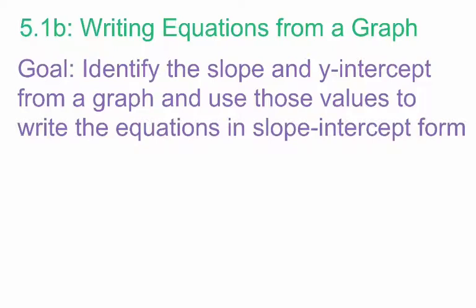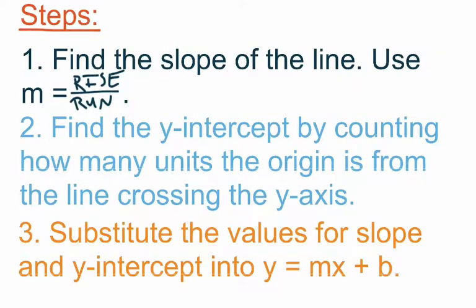Here are the steps. Our first step is to find the slope of the line. When we're dealing with the graph of a line, in order to find the slope, we want to use m equals rise over run. Now if you wanted, you could identify individual points on the graph and use m equals y2 minus y1 over x2 minus x1, but I prefer rise over run when dealing with the graph of a line.